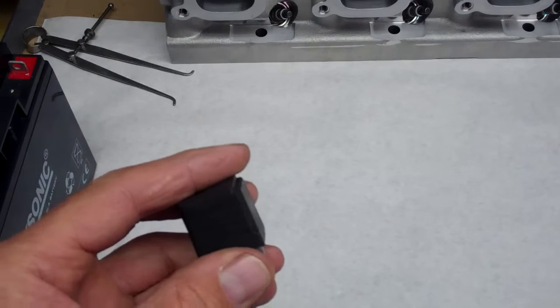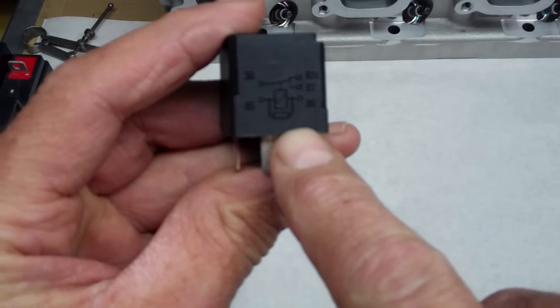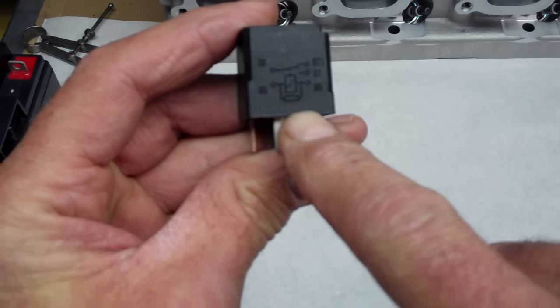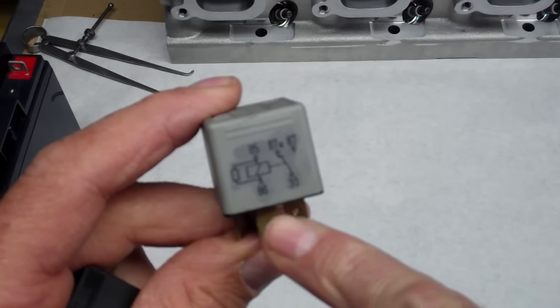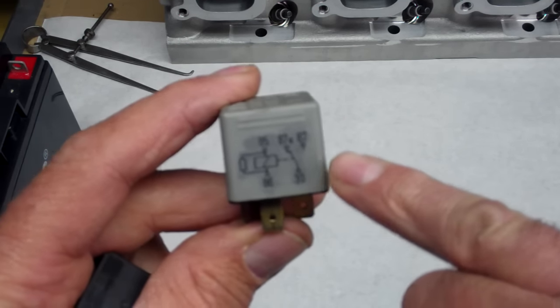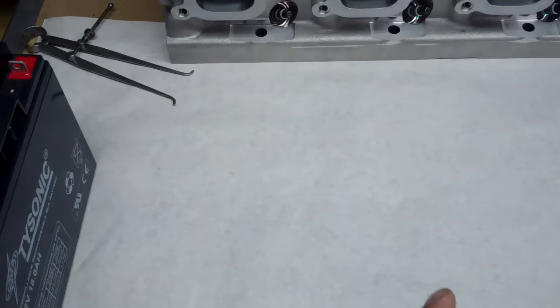So the other thing you'll see on a lot of relays is there's a diagram on the side. This diagram will give us a pretty good idea how these circuits are supposed to go together and how they're supposed to work. Let's draw this out.